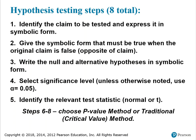There are 8 total steps for hypothesis testing. Step 1: identify the claim to be tested and express it in symbolic form. Step 2: give the symbolic form that must be true when the original claim is false, which is the opposite of the claim. Step 3: write the null and alternative hypotheses in symbolic form. Step 4: select significance level — unless otherwise noted, use alpha as 0.05. Step 5: identify the relevant test statistic, either normal or T. Steps 6 through 8 you choose based on the method, either the P-value method or the traditional critical value method.